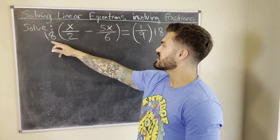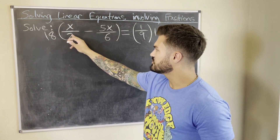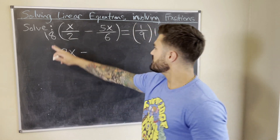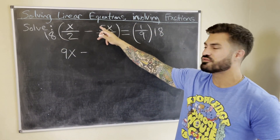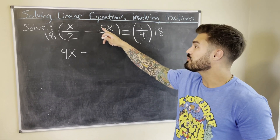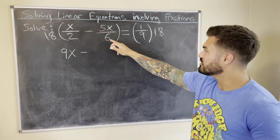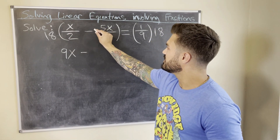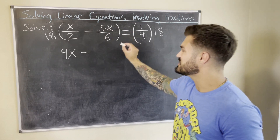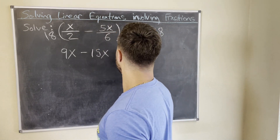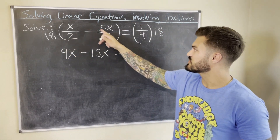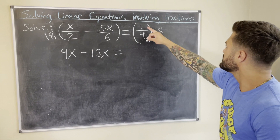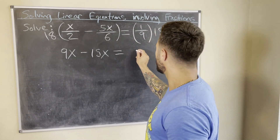Multiplying both sides by 18: on the left, 2 goes into 18 nine times, so the 18 cancels with the 2 and we get 9x. For the next term, don't multiply 18 by 5 and then divide — instead, just note that 6 goes into 18 three times, so 18 cancels with 6 to give 3, and 3 times 5x is 15x. Then 18 over 9 is 2, since 9 goes into 18 twice.